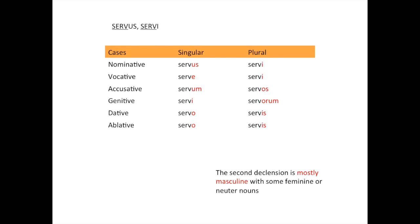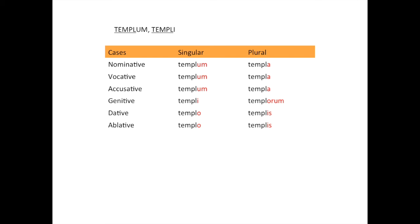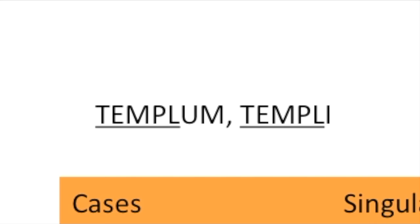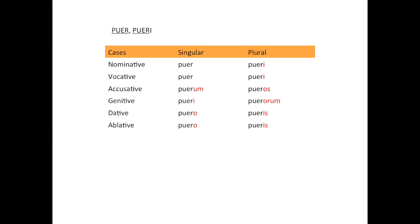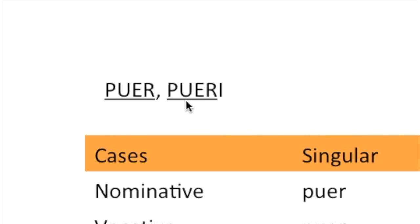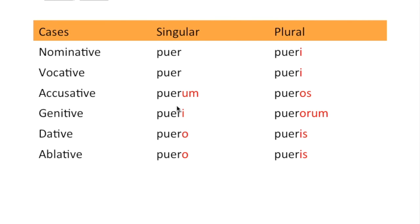What are neuter nouns? Neuter nouns are nouns that are neither masculine nor feminine. For second declension neuter nouns, take 'templum, templi' as the example — to find the stem, take 'um' off of that or take the 'i' off of that, and then add the endings. There's also another type of second declension noun which ends in 'er.' To find the stem of this type, you take the genitive and remove the 'i.' The special thing about this noun is for the nominative and vocative singular, you use the stem and add nothing.